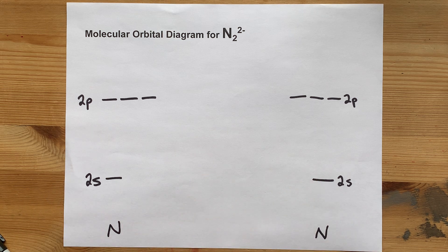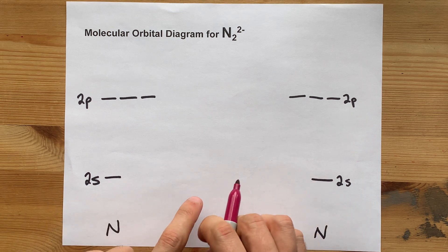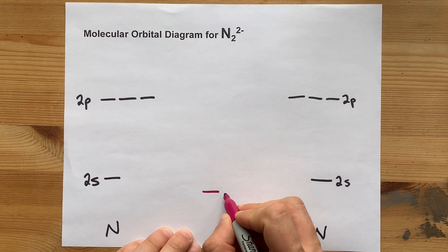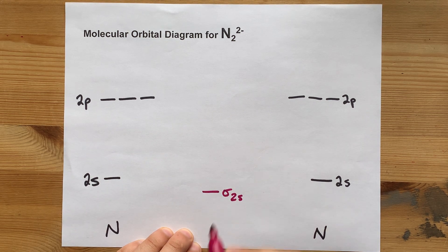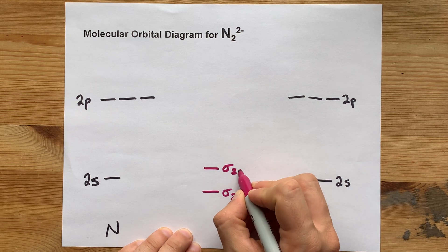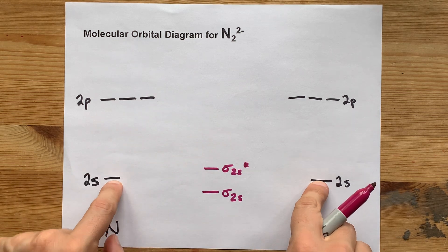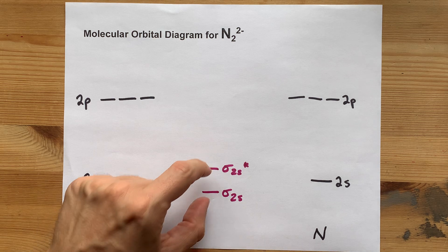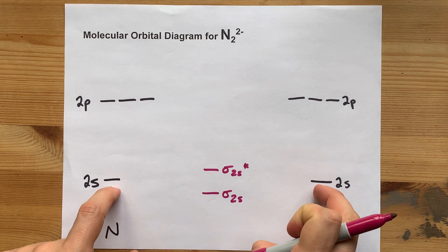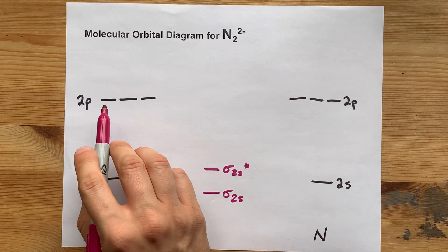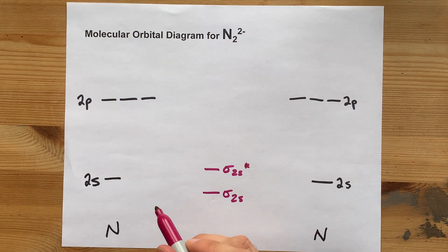What happens when these bonding orbitals overlap? These are atomic orbitals — we're going to create molecular orbitals in between. When the 2s orbitals overlap, you end up with a sigma-2s bonding orbital and a sigma-2s anti-bonding orbital. I'm trying to make it so that these lines are centered between these two, so that the average between them is the same. That's because we're not creating or destroying any energy.